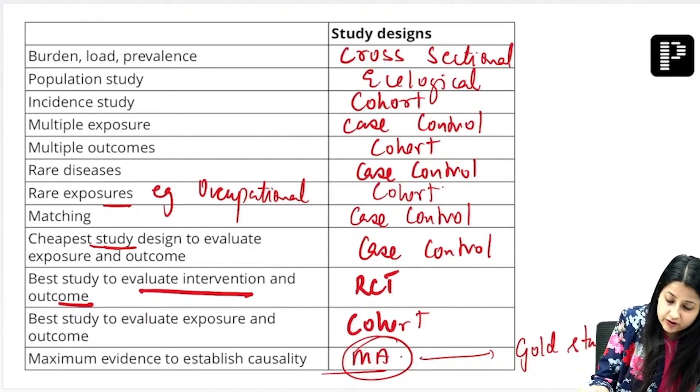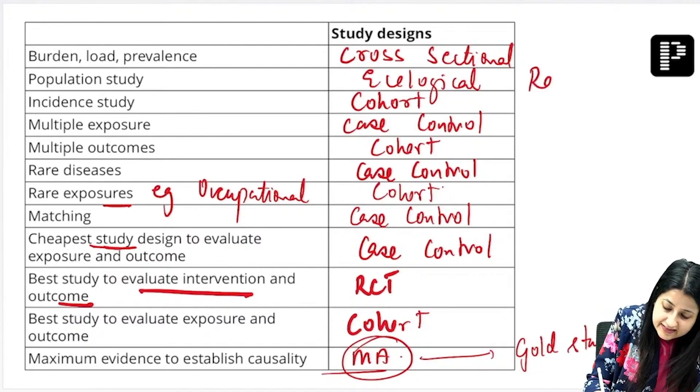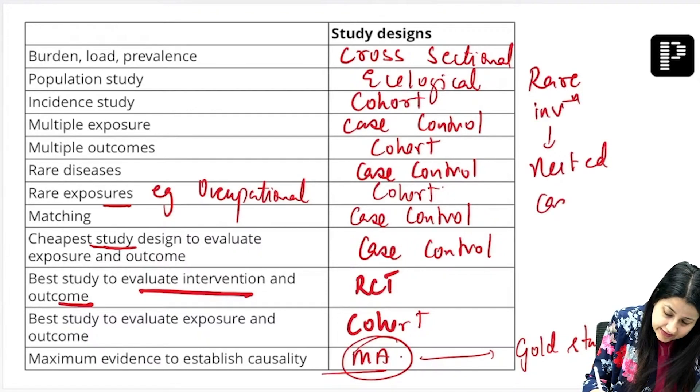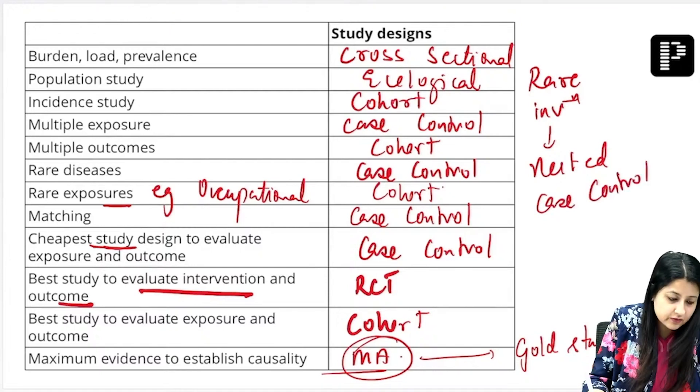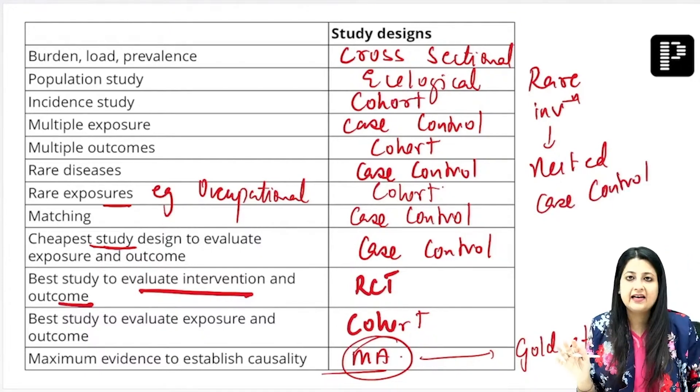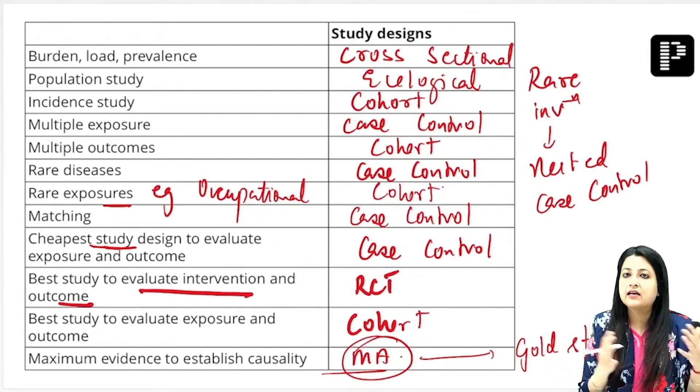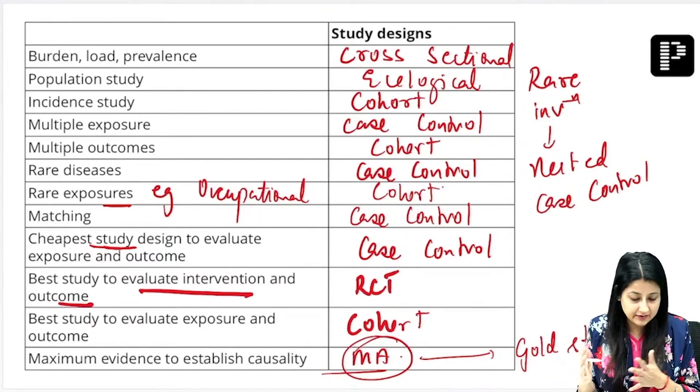Also remember: rare investigations. If they ask you rare investigations, it is which one? It is nested case control. Will you remember that? So that's how we have covered most of the questions which have come in the past two to three years.